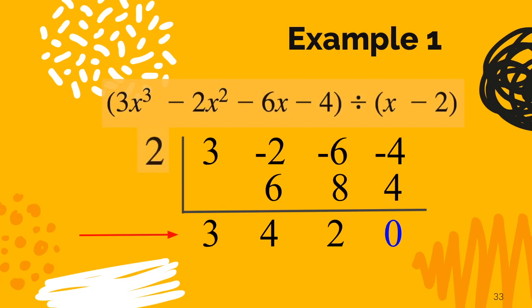Now what on earth are these numbers? 3, 4, 2, 0. Well it turns out they are the coefficients on our answers. The first term in our answer will be 3x squared. And then the second term will be 4x. And then the third term will be plus 2. And then you're probably wondering what that blue 0 is at the end. Turns out that's the remainder.